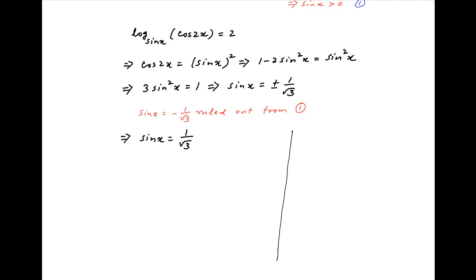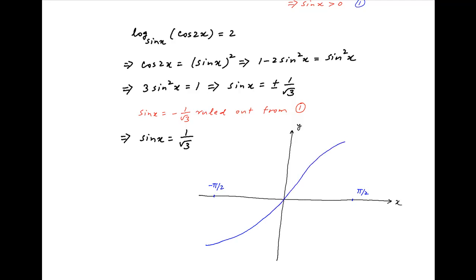In order to solve sin x equals 1 upon root 3, let's plot the function y equals sin x on the Cartesian plane. At x equals minus π/2, the lower end of the given interval, sin x equals minus 1, and at x equals π/2, the upper end, sin x equals 1. The curve y equals sin x passes through the origin and is monotonically increasing in the interval minus π/2 to π/2.